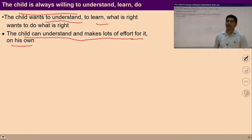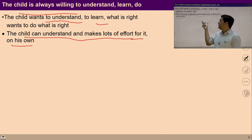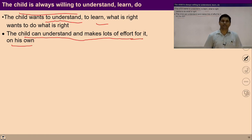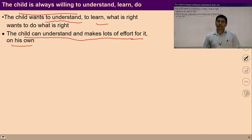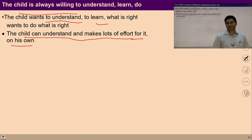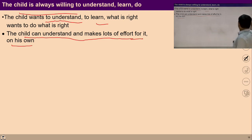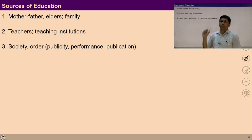A child has an innate desire to understand and an innate faculty to know everything. If we teach them with the feeling of affection and guidance, it becomes very easy for the child to understand the whole process. Education can only be imparted with the feeling of relationship. Let us also understand the sources of education: what are they?